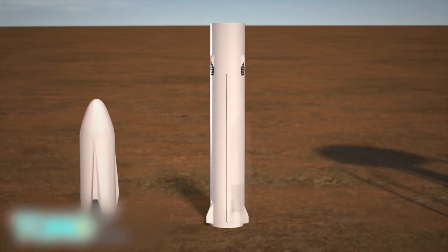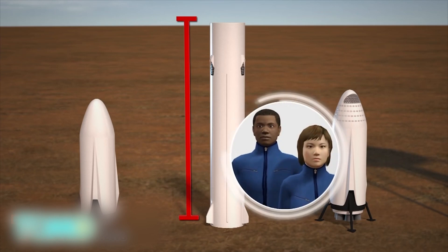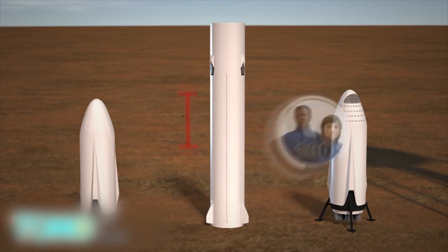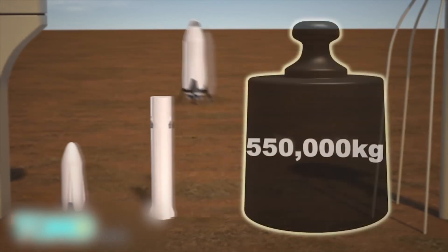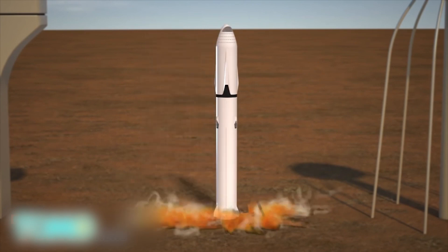Using the Interplanetary Transport System, or ITS, SpaceX founder Elon Musk hopes to use a spacecraft composed of a 250-foot reusable rocket and 100-passenger spaceship to ferry humans back and forth to Mars. Musk envisions a thousand-strong Mars colonial fleet of these ships departing en masse.